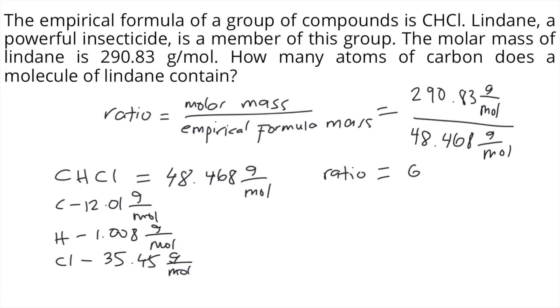So what are we going to do with this ratio? Remember, we have the empirical formula CHCl, or that's the same as C₁H₁Cl₁. You need to multiply all of the subscripts by the ratio, which is 6.